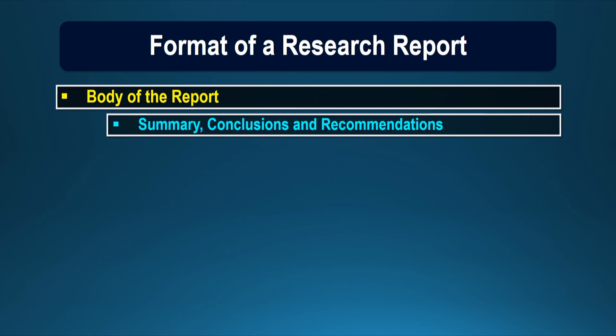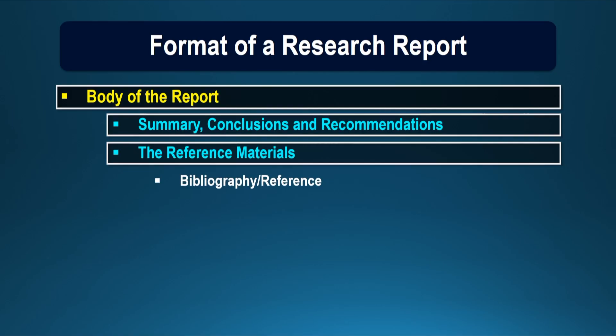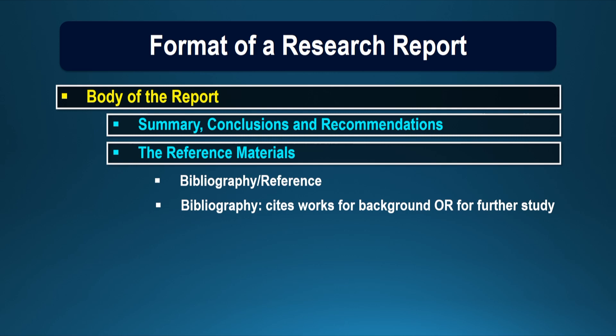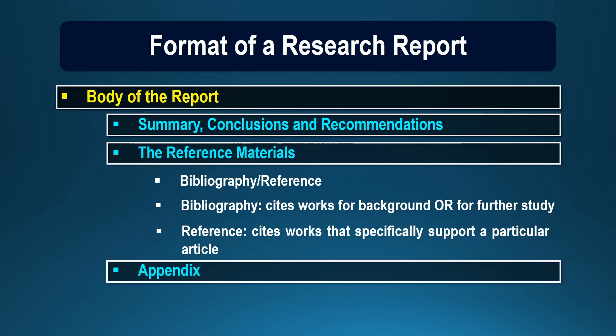The last chapter describes the summary, the conclusion, and recommendations. The last section of the report describes the reference material, which may contain bibliography and references. There is a slight difference: bibliography cites works for background or further study, whereas references cites works that specifically support a particular article. At the end, some information, tables, pictures, or diagrams which could not find a place in the body of the report are appended at the end.